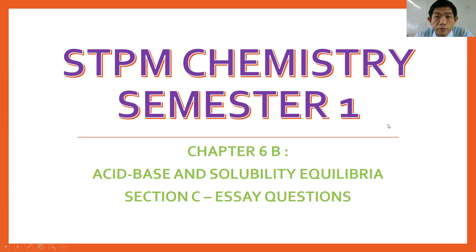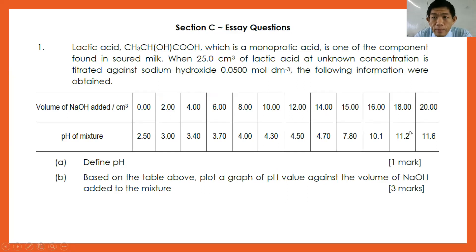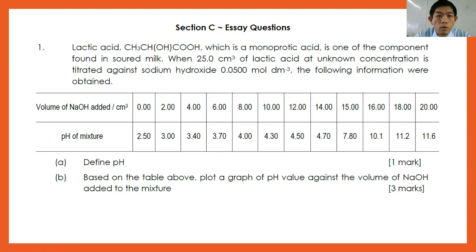We are going to have a look at the essay questions and answer accordingly. Number one: lactic acid, which is a monoprotic acid, is one of the components found in sour milk. When 25 cm³ of lactic acid of unknown concentration is titrated against sodium hydroxide 0.0500 mol dm⁻³, the following information is obtained — the volume of NaOH added and the pH. So number one: define pH. And then B: based on the table above, plot the graph of pH value against the volume of sodium hydroxide added.